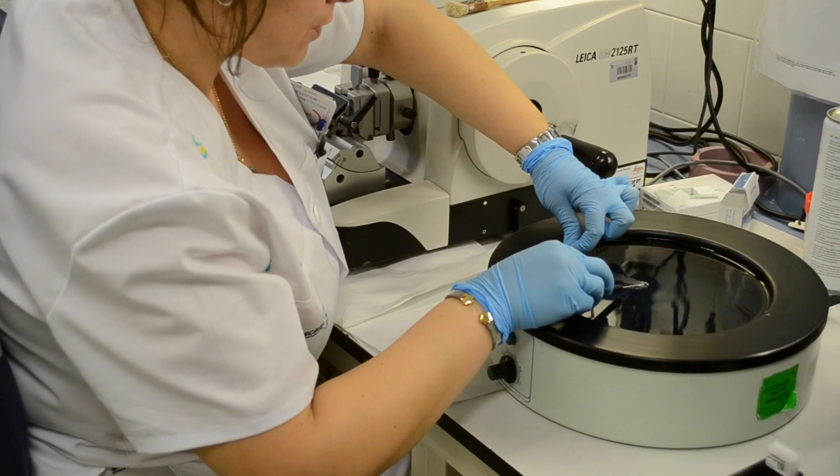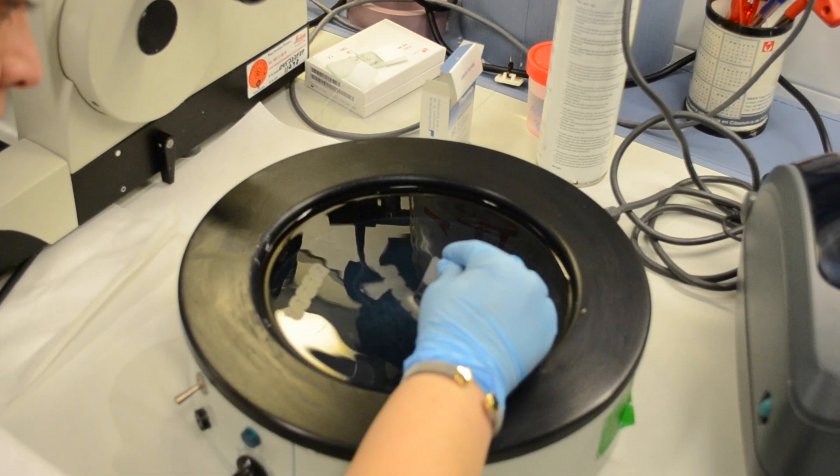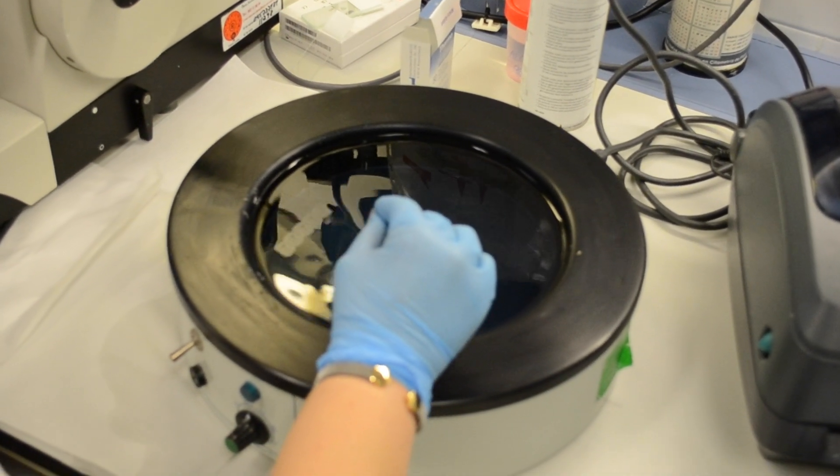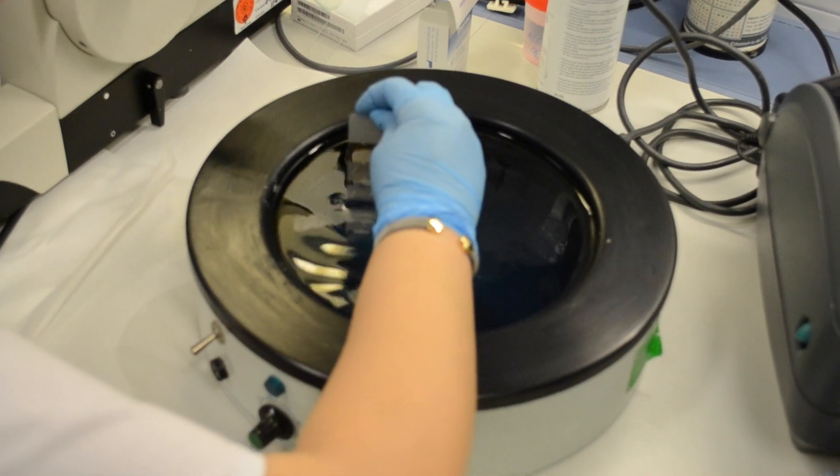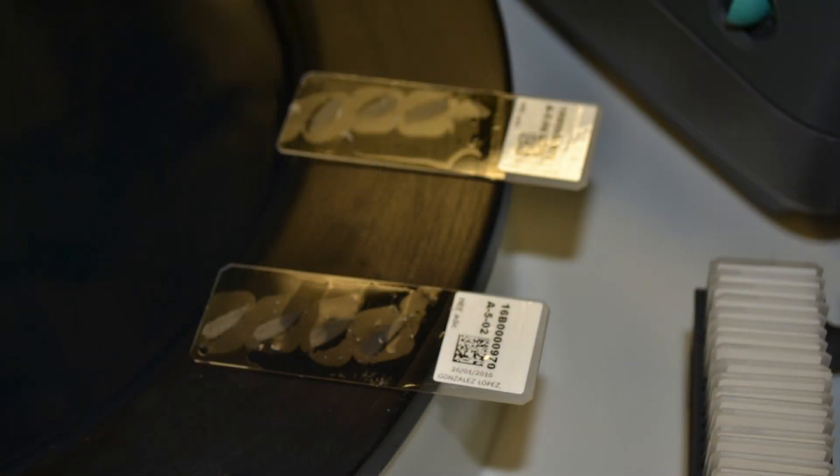Following sectioning, samples are placed on slides. For paraffin-embedded samples, slices are first placed into a warmed water bath between 27 to 30 degrees Celsius and are then lifted out of the water onto the slide and allowed to dry.